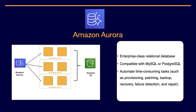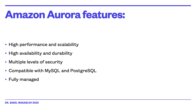Amazon Aurora is a highly scalable, performance-optimized, and cost-effective managed relational database. It offers a distributed high-performance storage subsystem and is designed to be highly available with fault-tolerant and self-healing storage built for the cloud. Aurora replicates multiple copies of your data across multiple Availability Zones and continuously backs up your data to Amazon S3.